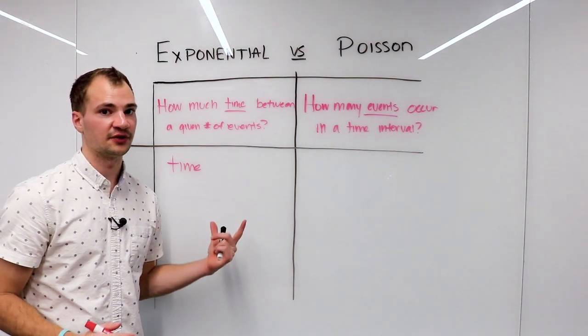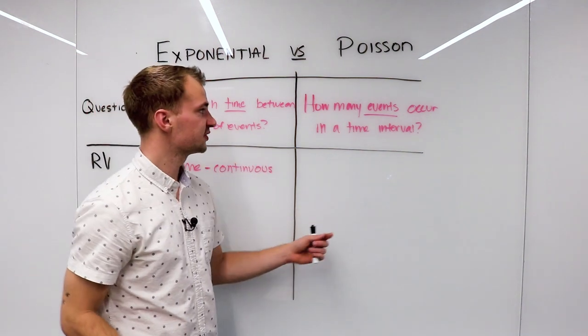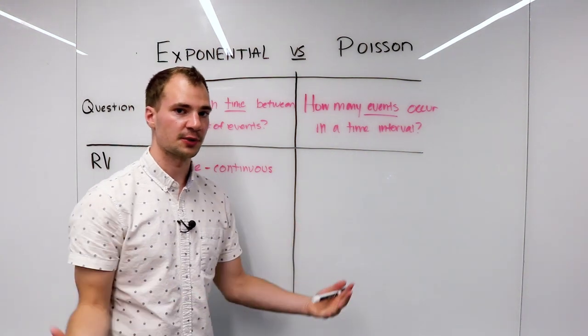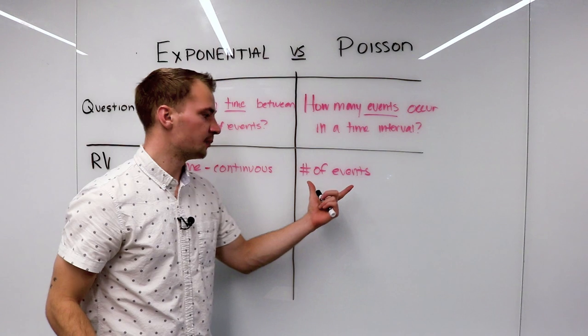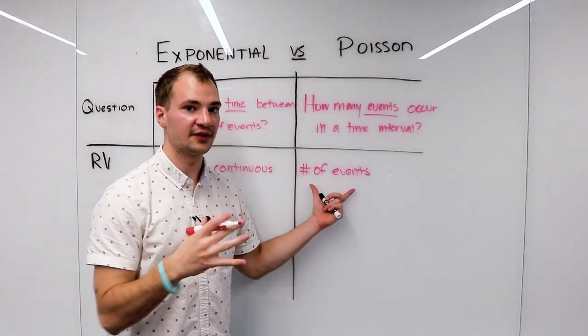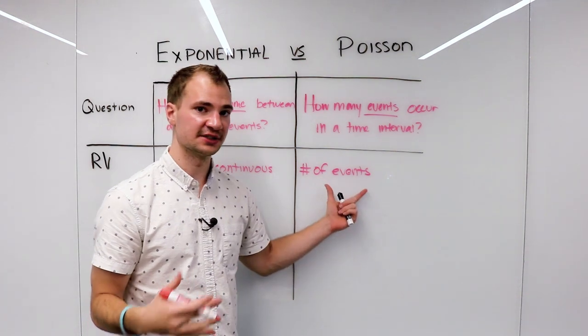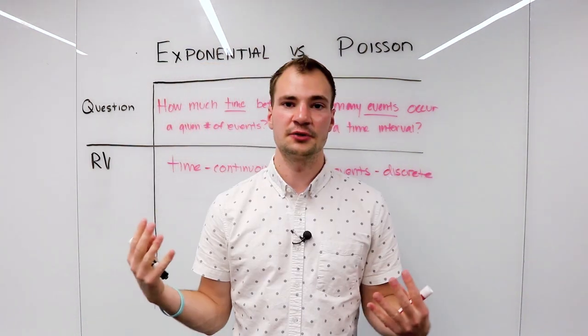Now for Poisson, because we're answering how many events occur, the random variable is going to represent the number of events. And because a number of events cannot take on any value—in other words, we can't have three and a half people arriving—we know that this is discrete.